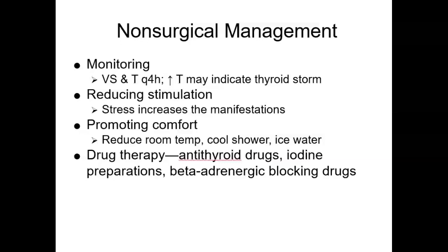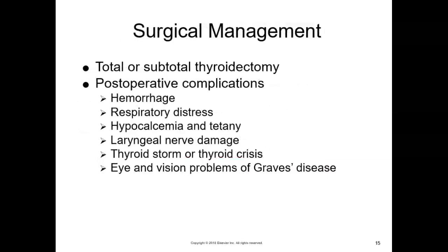The degree of thyroid destruction varies. Some patients become hypothyroid as a result of treatment and then need lifelong thyroid hormone replacement. In terms of surgical management for hyperthyroidism, surgery to remove all or part of the thyroid gland is used for Graves' disease that does not respond to other therapies. It is also used when a large goiter causes tracheal or esophageal compression. After a total thyroidectomy, patients must take lifelong thyroid hormone replacement.